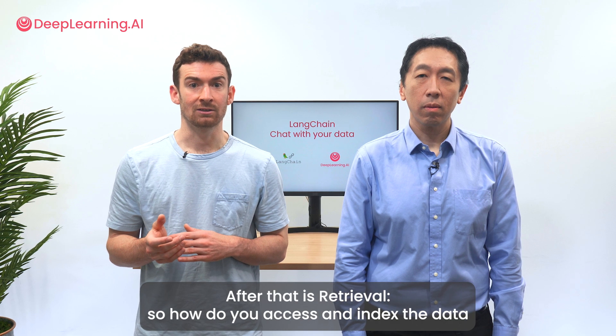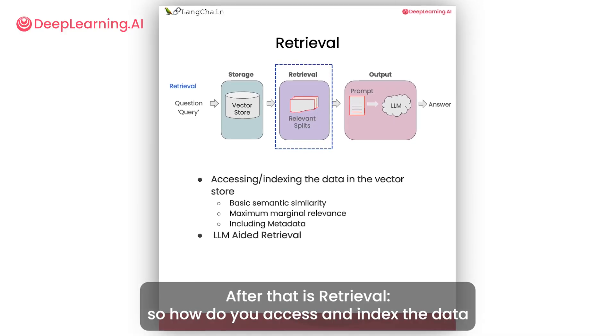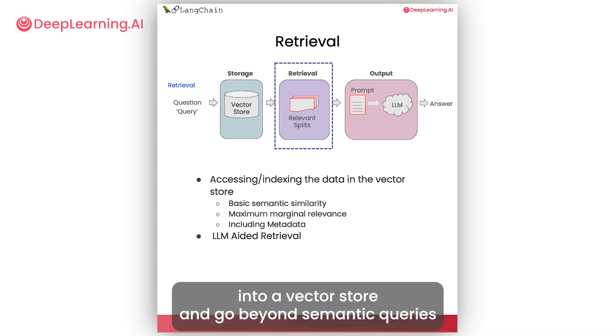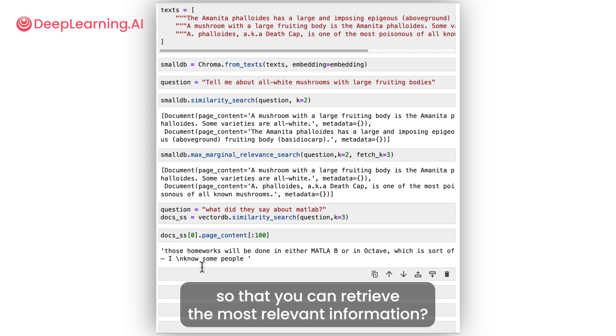After that is retrieval — how do you access and index the data into a vector store and go beyond semantic queries so that you can retrieve the most relevant information?